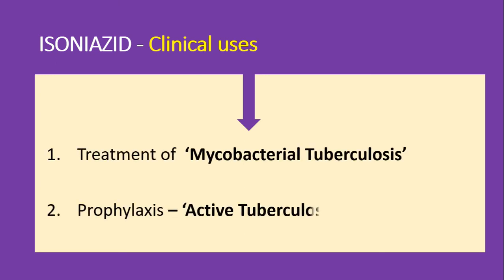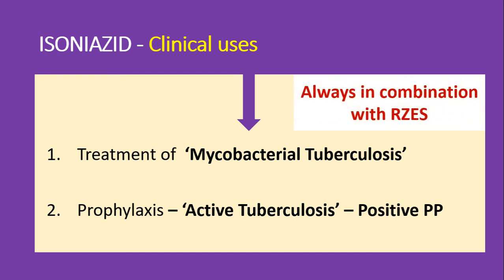Moving on to the clinical uses of isonia acid: it is used in the treatment of mycobacterial tuberculosis and also in the prophylaxis of active tuberculosis in patients with a positive purified protein derivative test, also called the tuberculin skin test. When used in treatment, isonia acid is always used in combination with other anti-tubercular drugs like rifampicin, pyrazinamide, ethambutol, and streptomycin, which are the first-line anti-tubercular drugs.